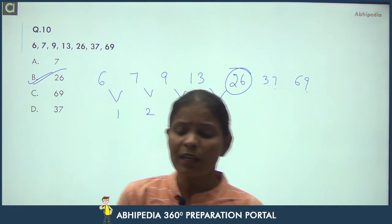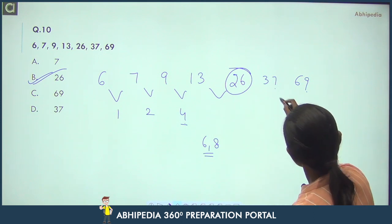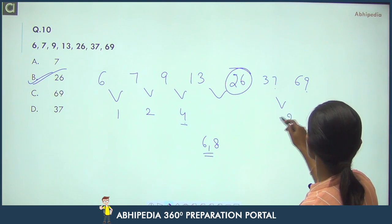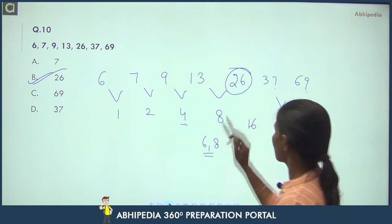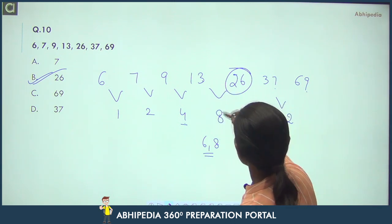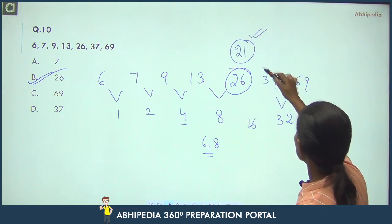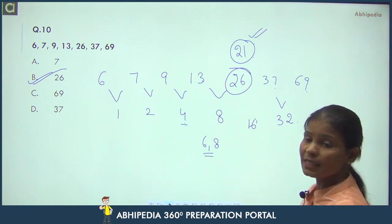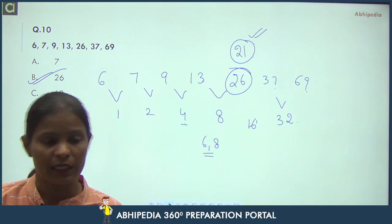Checking the correct term: if the difference should be 8, then in place of 26 there should be 13 + 8 = 21. So 21 is the correct term. The pattern continues: differences 1, 2, 4, 8, 16, 32 — all doubling. Done.